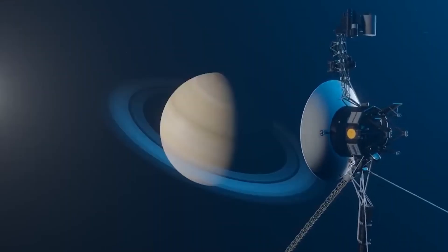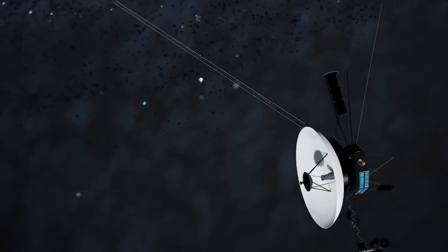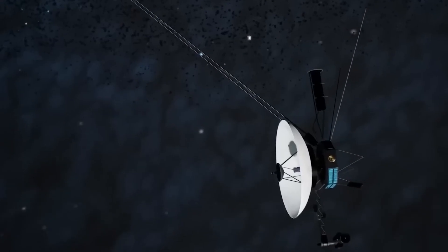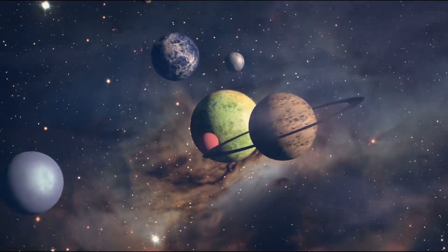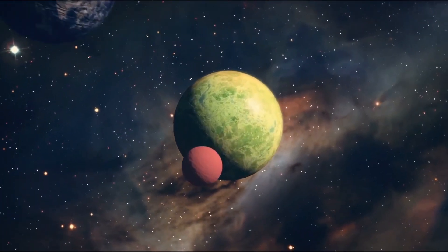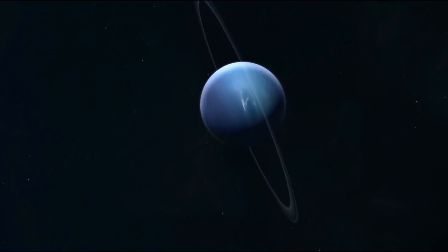Voyager 2 in particular was the first spacecraft to approach Uranus in 1986 and Neptune in 1989, becoming the only probe that visited those planets, surprising scientists with astonishing findings in previously unexplored territories.